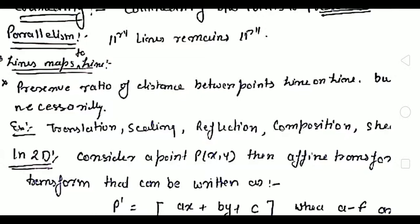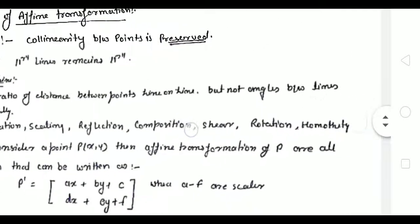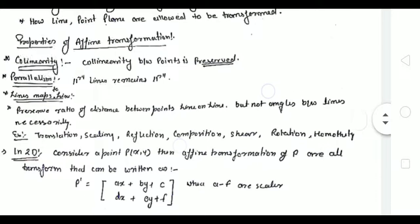Another property is lines map to lines — the ratio of distance between points on a line is preserved. Whatever line ratios are in the old object, the same thing happens in the new object after transformation. However, angles can be different — they can be preserved or not; there is no strict rule.